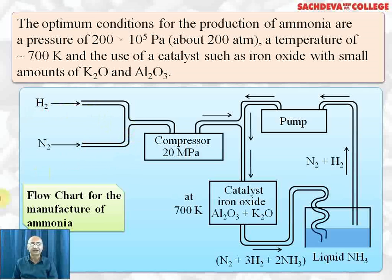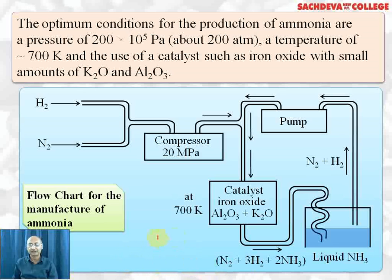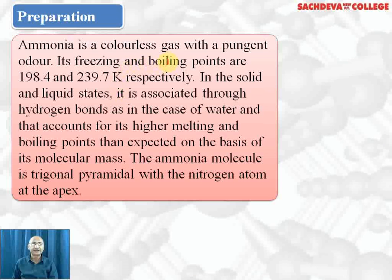Hydrogen is set free and used for the manufacture of ammonia. This nitrogen-hydrogen mixture is compressed at 200 atmospheres and fed into the catalytic chamber containing aluminum oxide and potassium oxide, already at 700 Kelvin. This leads to the formation of ammonia. The mixture of ammonia, nitrogen, and hydrogen is compressed so that liquid ammonia is separated, and the nitrogen and hydrogen are recycled. This flow chart represents the manufacture of ammonia from nitrogen and hydrogen by the Haber process.